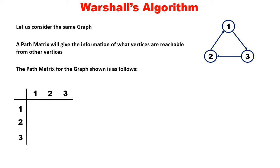Is there a path from 1 to 1? Yes, there is a path: 1 to 3, 3 to 2, 2 to 1 — therefore 1. Is there a path from 1 to 2? Yes: 1 to 3, 3 to 2. Is there a path from 1 to 3? Yes, there is a direct edge. Is there a path from 2 to 1? Yes, there is a direct edge. 2 to 2? Yes: 2 to 1, 1 to 3, and back to 2. 2 to 3? Yes: 2 to 1 and 1 to 3.